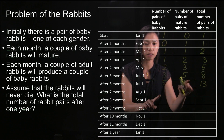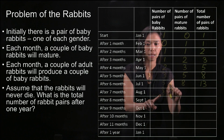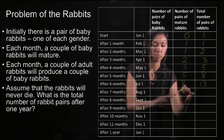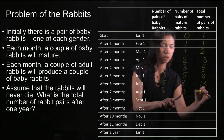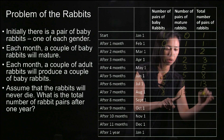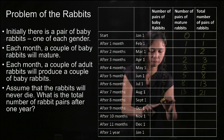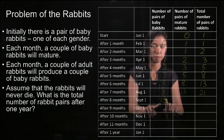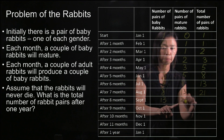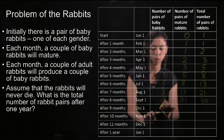The eight mature pairs give birth to eight baby pairs. Mature pairs become 13, and from these two columns we get 21 in total. Then we have 13 pairs of baby rabbits, 21 pairs of mature rabbits, giving 34 in total.